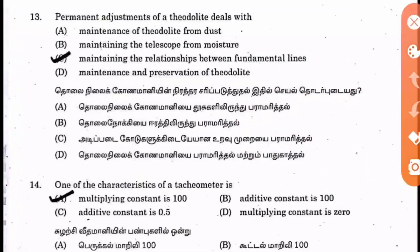Question 12: Permanent adjustments of a theodolite deals with what? The answer is maintaining the relationship between the fundamental lines. The other options — like protecting the theodolite from dust or moisture — are not part of permanent adjustments.